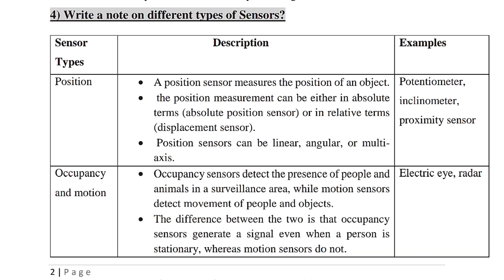The position sensors are linear, angular, and multi-axis. Examples include the Potentiometer, Inclinometer, and Proximity Sensor. We will learn about the Potentiometer in the lab.